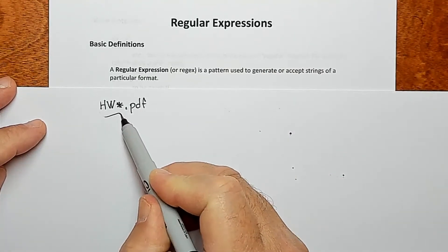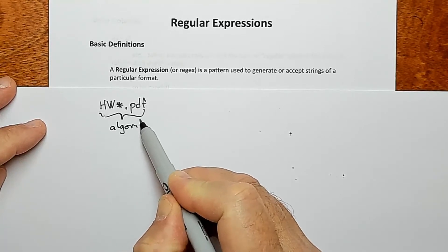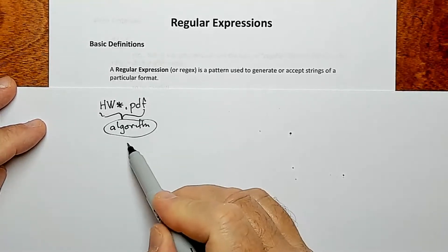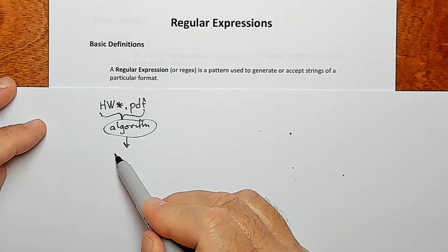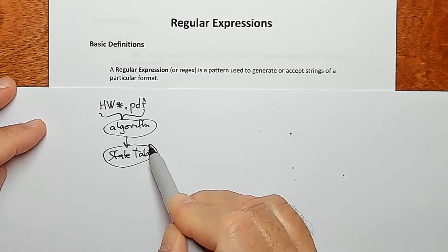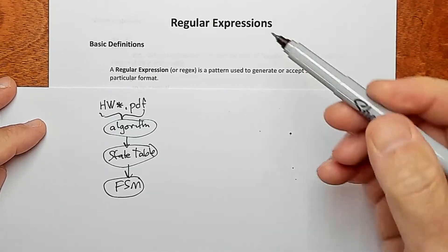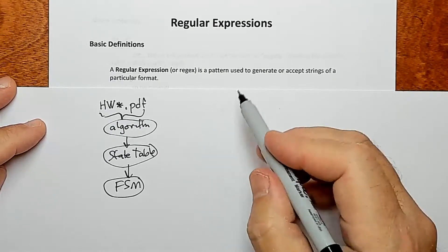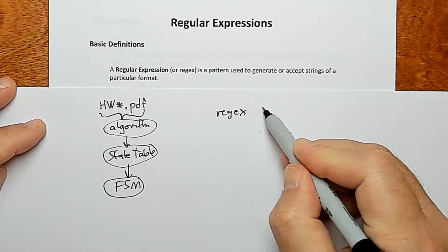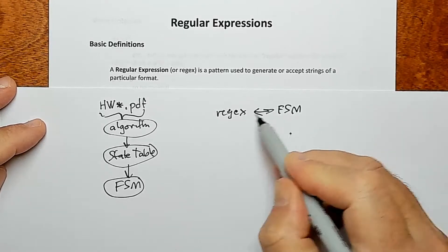Okay, but the way that this thing works is this is a pattern, and this is fed into an algorithm. Okay, and that algorithm generates a state table. And that state table is used as input into a finite state machine. So basically what we're saying is that for every regular expression there is an equivalent finite state machine and vice versa.